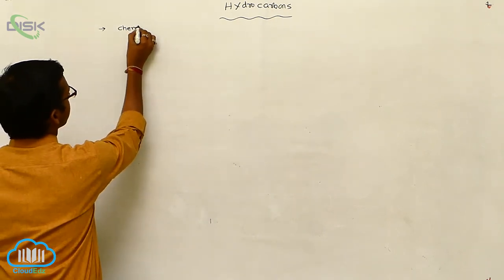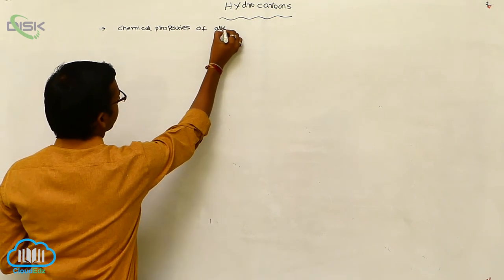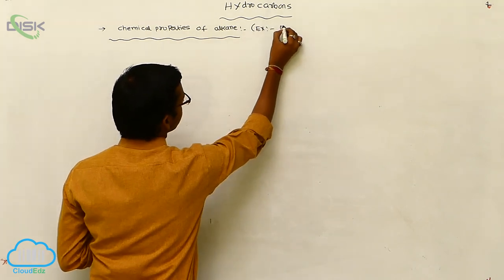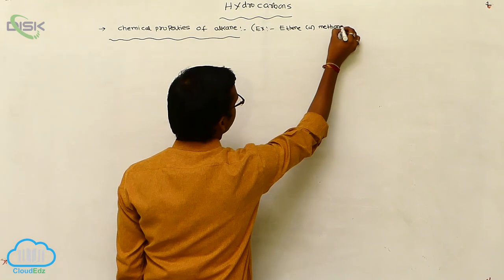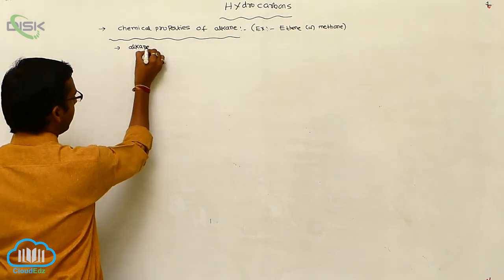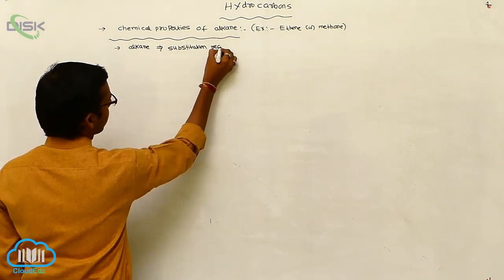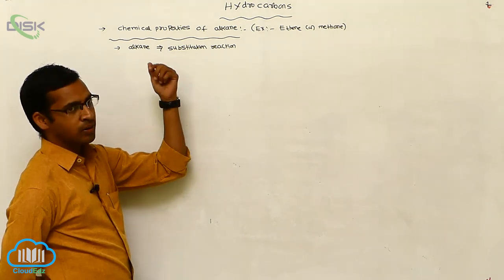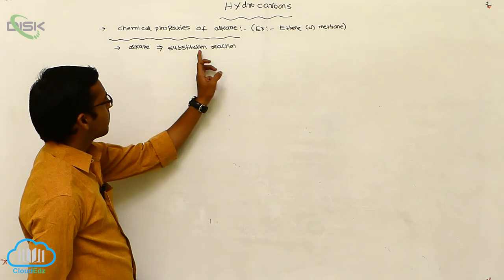We will discuss chemical properties of alkane. Generally, alkanes participate in substitution reactions. A substitution reaction means an atom or group is replaced by another new atom or group. Such a reaction is called a substitution reaction.